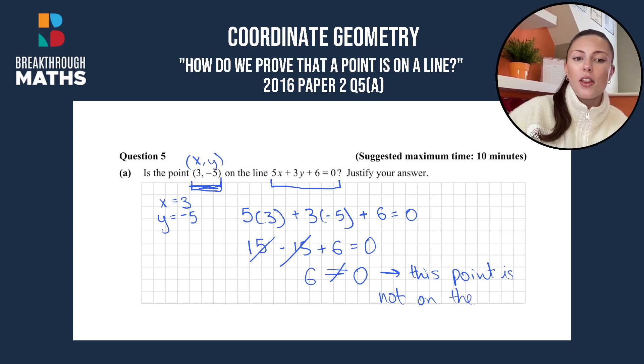If it was on the line, we would get 0 is equal to 0 and those points would substitute perfectly into the line. But we can see in this case it did not. So the point (3, -5) is not on the line and we have just justified our answer.